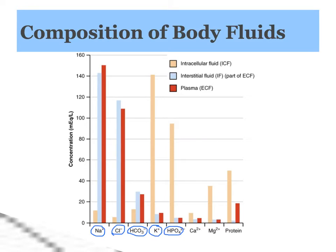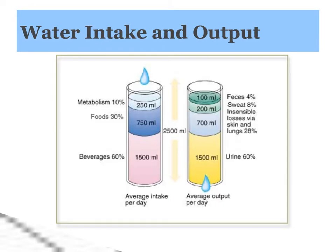Some other key electrolytes — calcium, magnesium, and various proteins — are found in different body fluid compartments. Over the course of a day, your water intake and your water output will balance out. It's roughly 2 liters; this diagram is saying 2.5 liters, or 2,500 milliliters, but it's in balance.